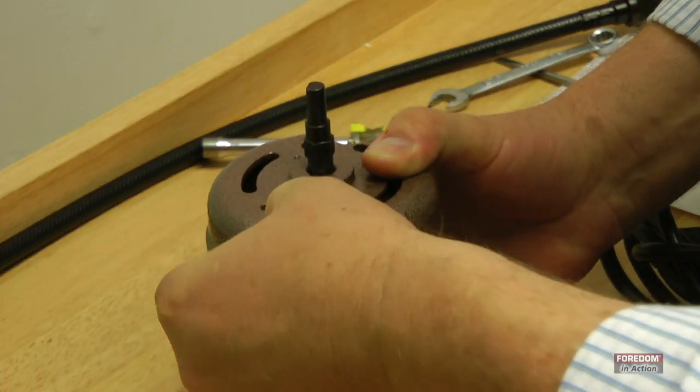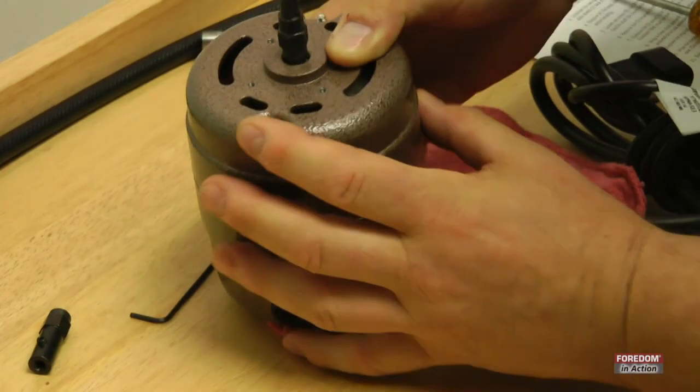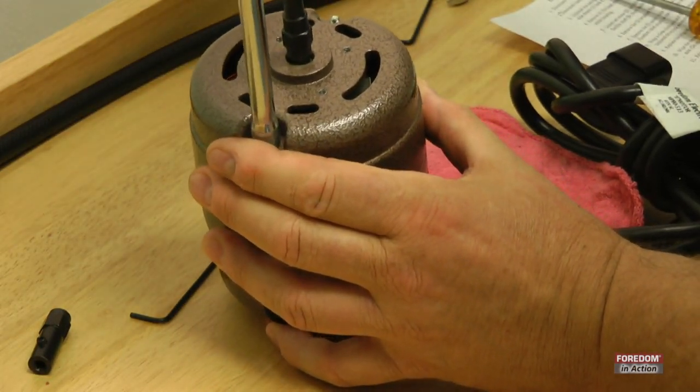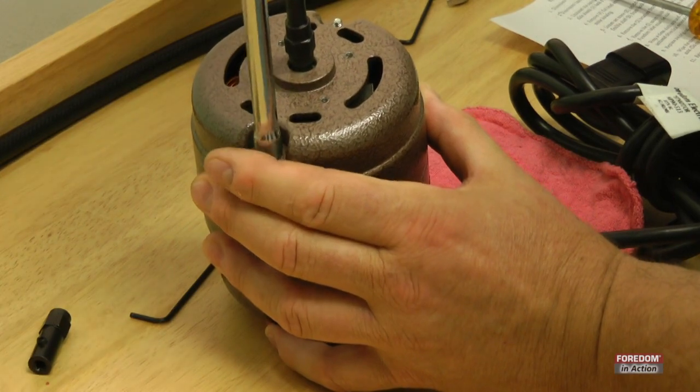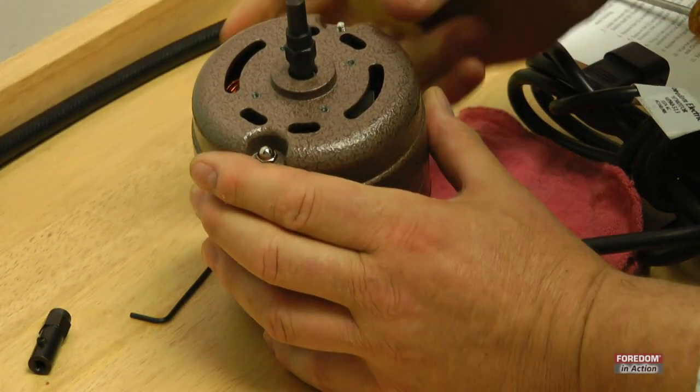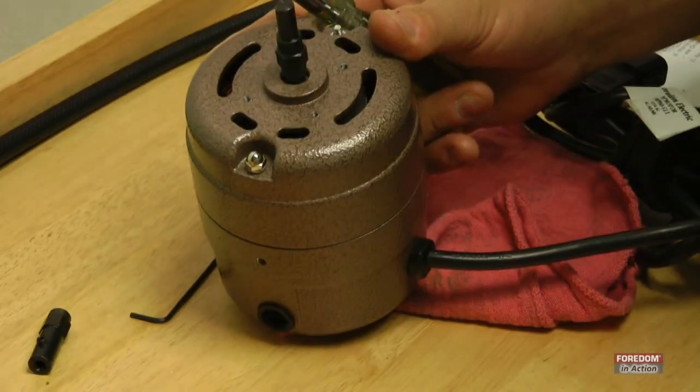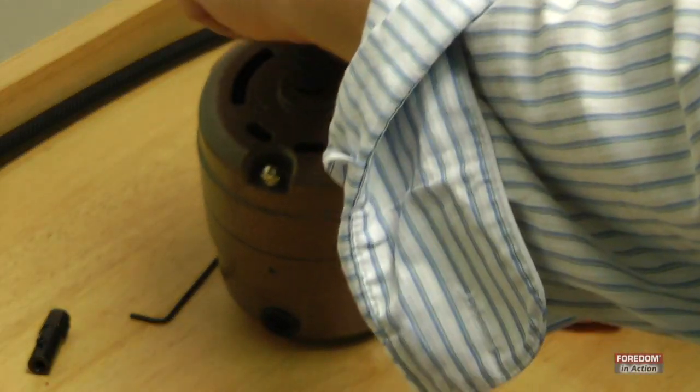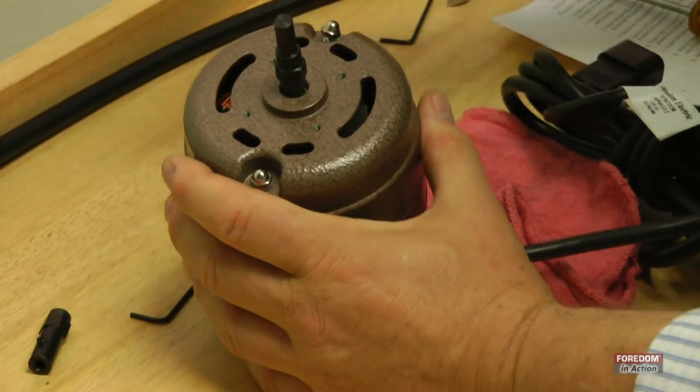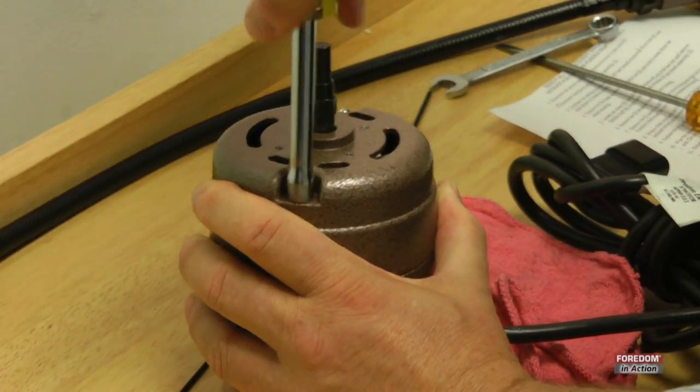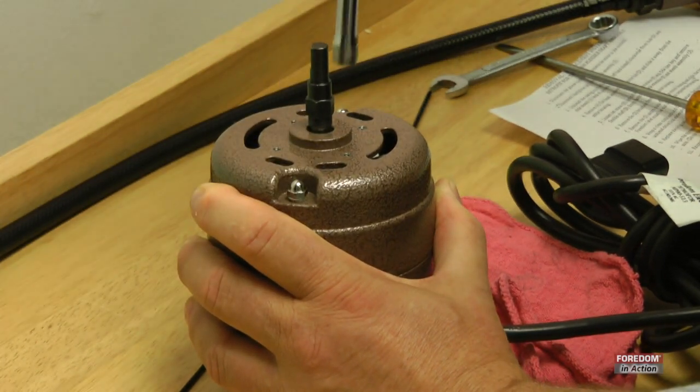And now the screws come through. Put your washers back on. Then your acorn nuts. Tighten it up.